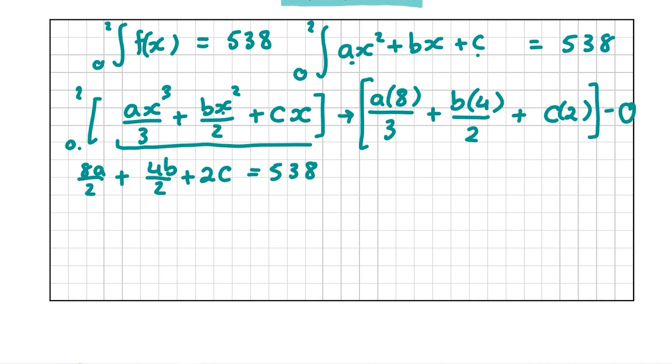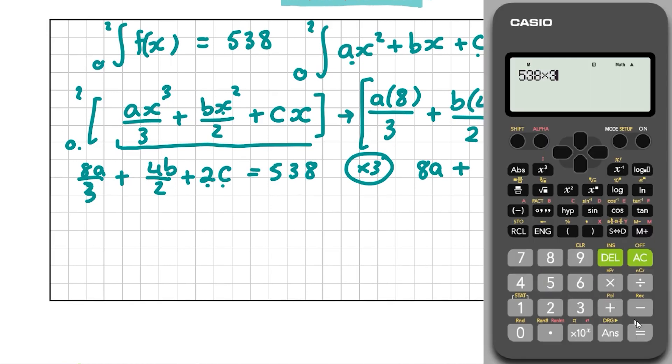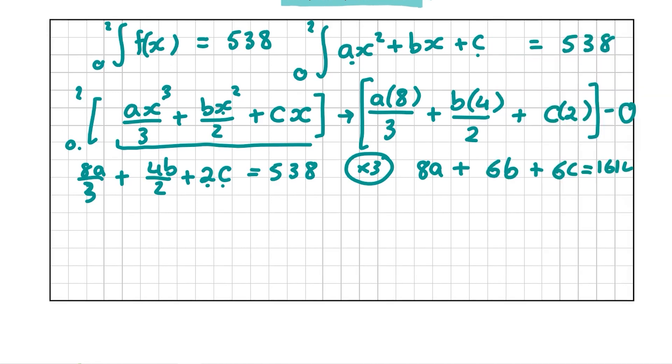That's not exactly what they're asking us for though. But we can manipulate it to make it exactly like this. Sorry, my apologies, I just noticed a mistake there. That should be 8A/3. So the first thing we're going to do is multiply across by 3. So we're going to have 8A/3 multiplied by 3, which is just 8A. 4B/2 multiplied by 3 gives us 12B/2, which is 6B. When you multiply 3 by 2C, you get 6C. And when you multiply 538 by 3, you get 1614.